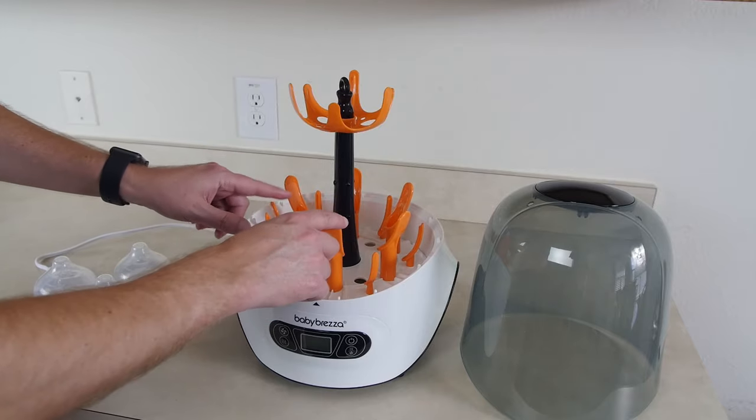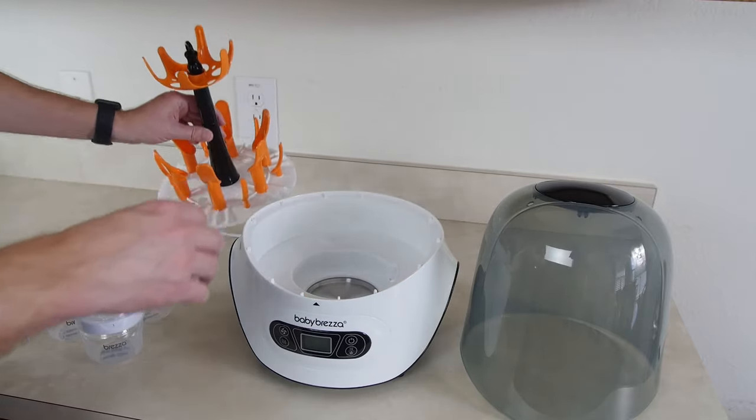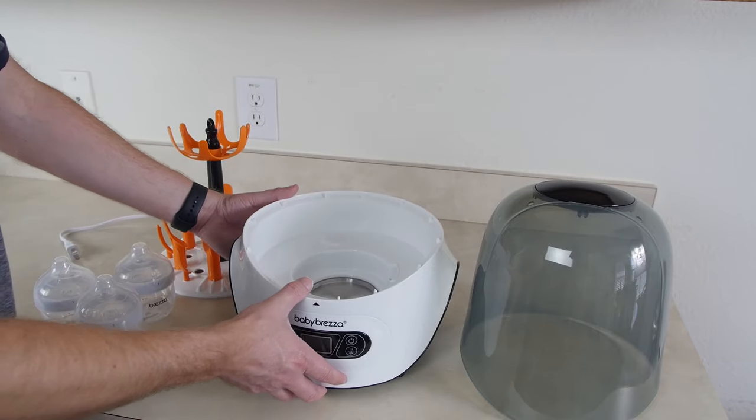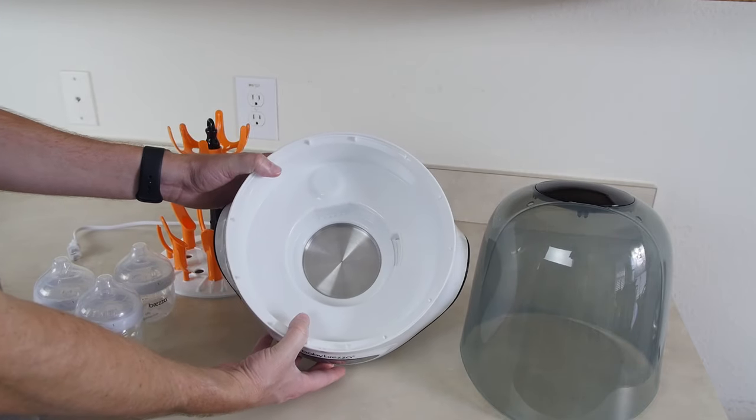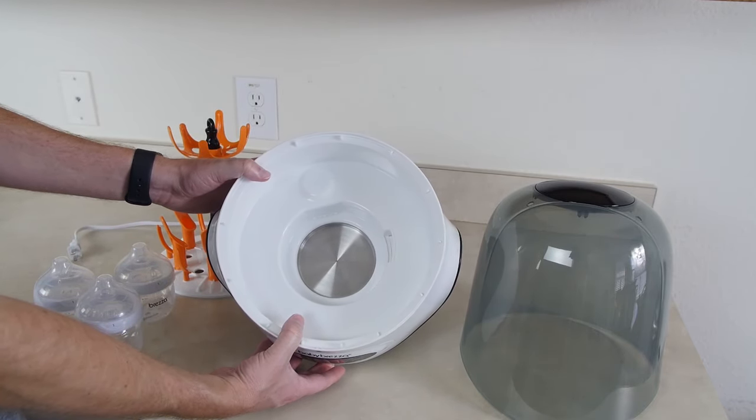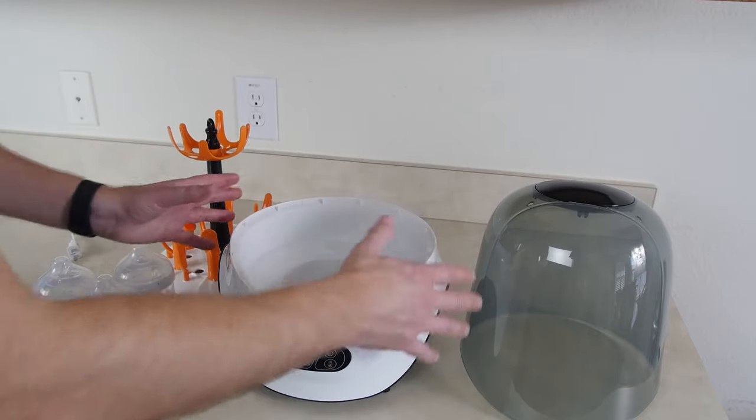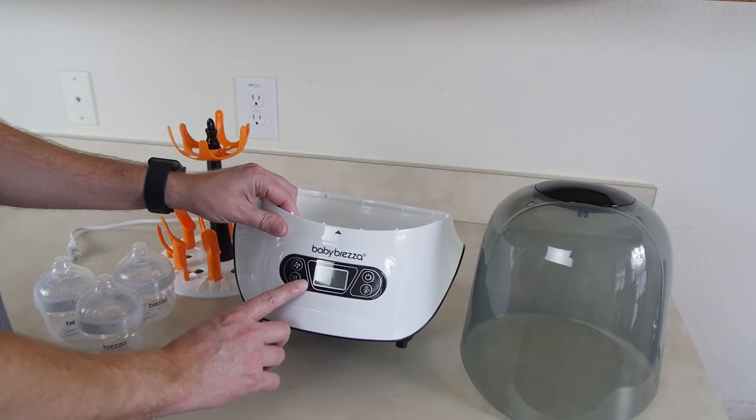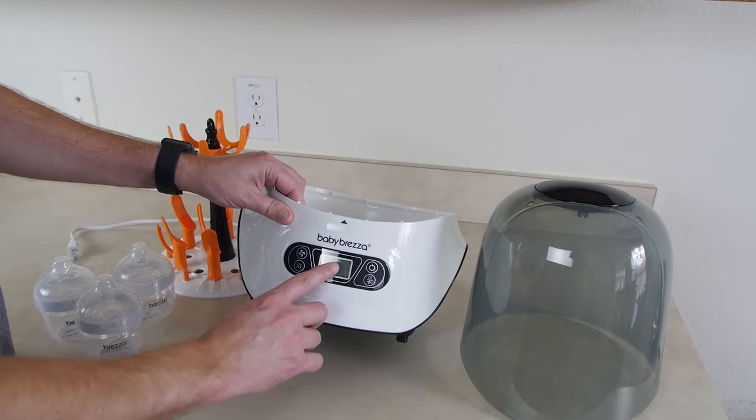Right down here these are the lower posts and go ahead and take those out. Inside the Baby Brezza we have the metal heating plate or the stainless steel heater plate. We have the sterilizer base which is this whole thing with the LCD control panel right down here.